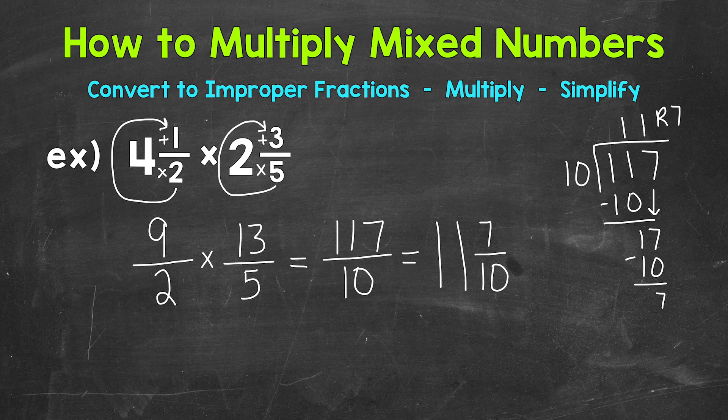So just to recap how we converted from an improper fraction to that mixed number, we did 117, the numerator, divided by 10, the denominator. So how many whole groups of 10 out of 117? 11. Then we have a remainder of 7, which is our numerator, and we keep our denominator of 10 the same.